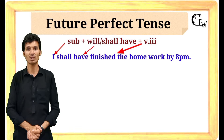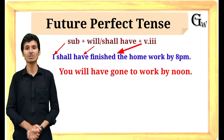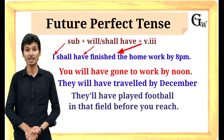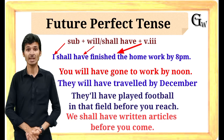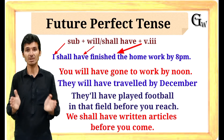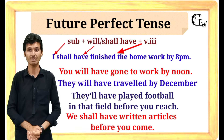I shall have finished the homework by 8 PM. You will have gone to work by noon. They will have traveled by December. They will have played football in that field before you reach. We shall have written articles before you come. So these are some examples of affirmative sentences in this tense.